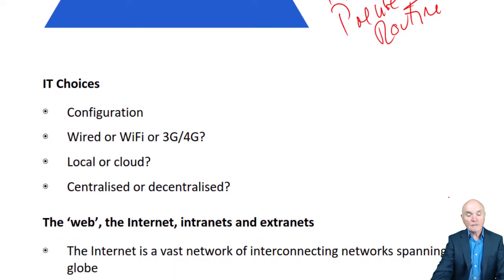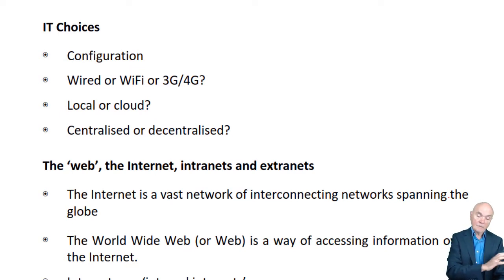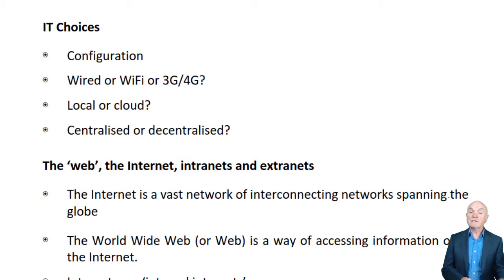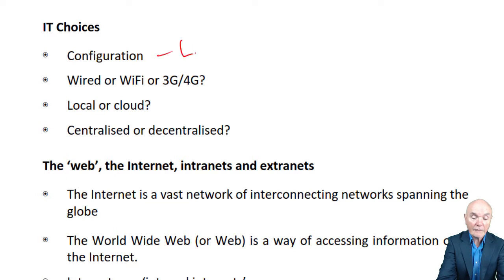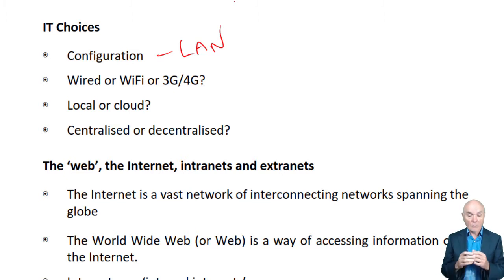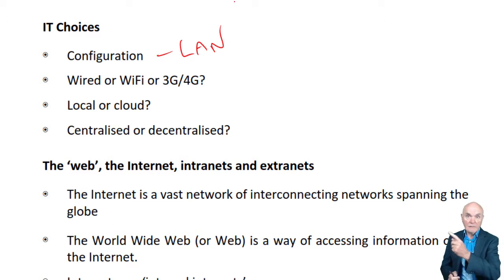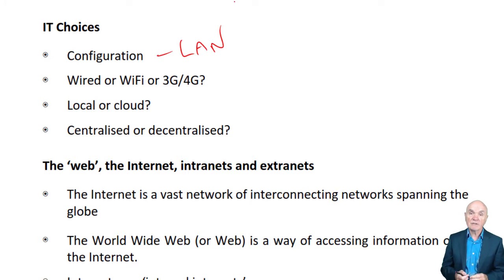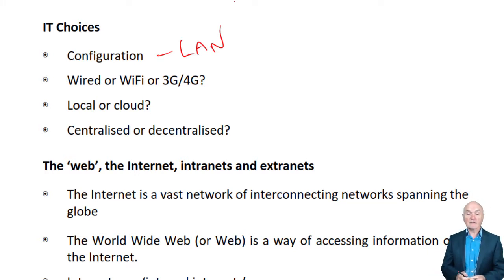The IT choices that we need to be making — looking at this very briefly — there is the configuration, which is really looking at a type of network. So we're going to local area networks. A local area network is typically found in an organisation like a company, university, or hospital. It puts a special cable around the buildings in the organisation, and this allows information to be passed from one person to another, allows information to be shared, and so on.